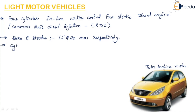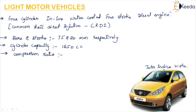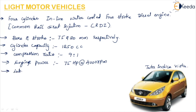The cylinder capacity is 1250 cubic centimeters. The compression ratio is 9 is to 1. The engine power is 75 horsepower at 4000 rpm. The lubrication system used is wet sump with splash, same as the petrol engine vehicle.